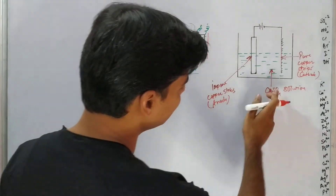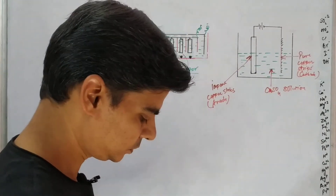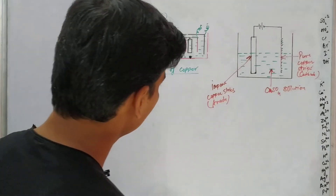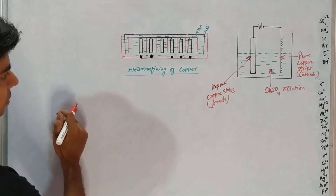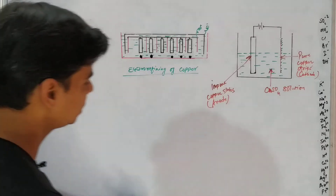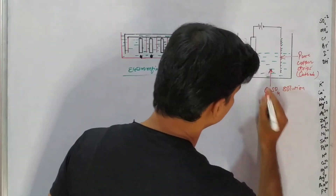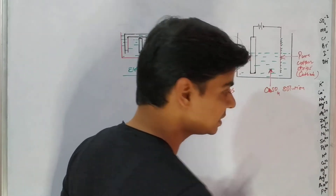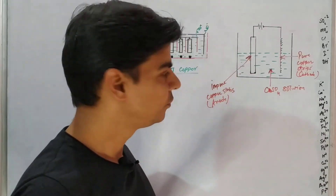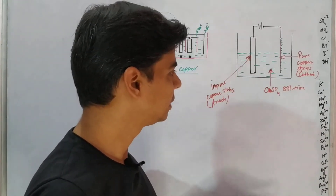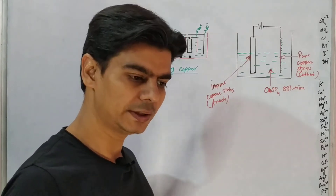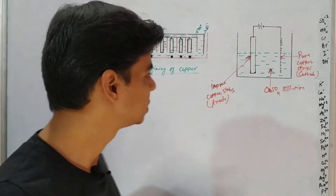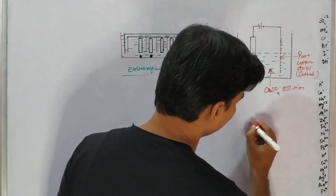Let's see what will happen now. The anode is an impure copper block. We do electro refining because copper contains other metallic impurities, and we need to remove those metallic impurities.